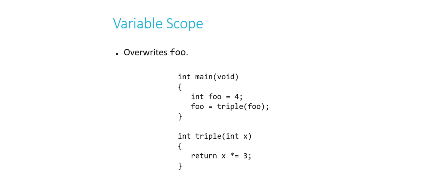So now, if we add another line of code here at the end of main to print out the value of foo, it would, in fact, print out 12.